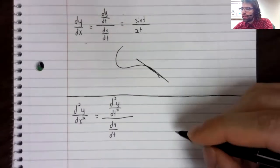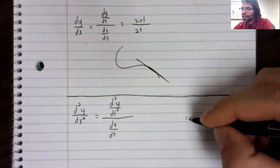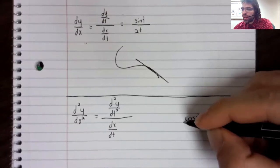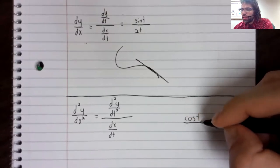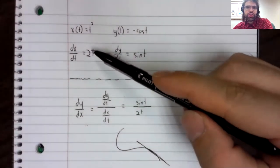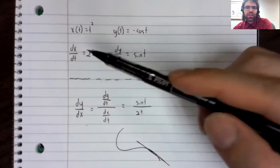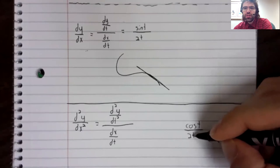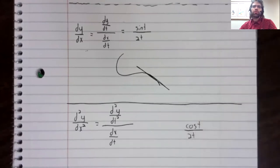The derivative of the sine is the cosine. But we would not differentiate this a second time. The cosine of t over 2t.